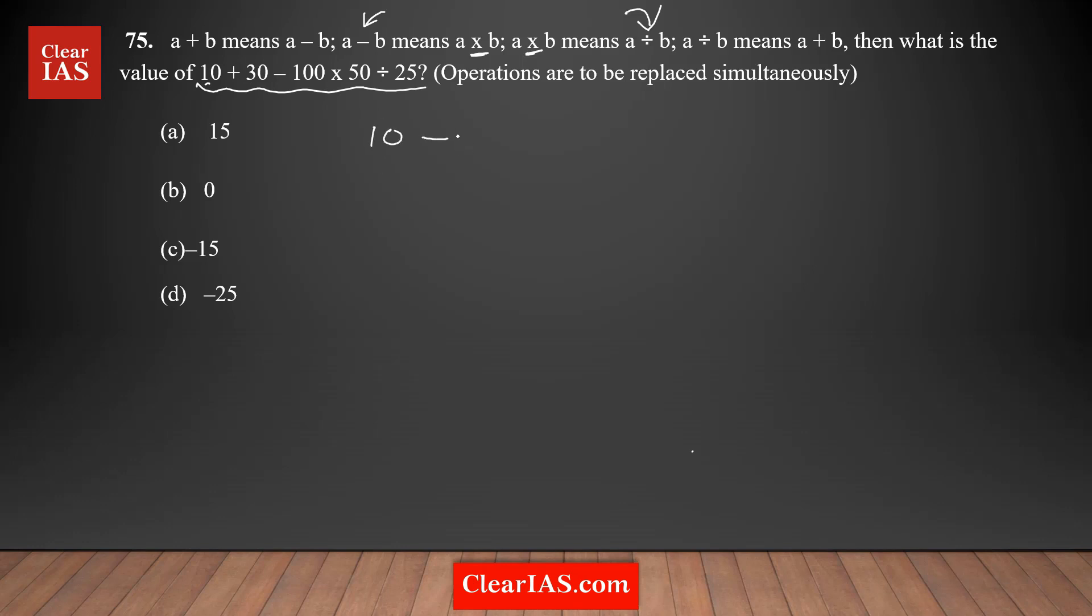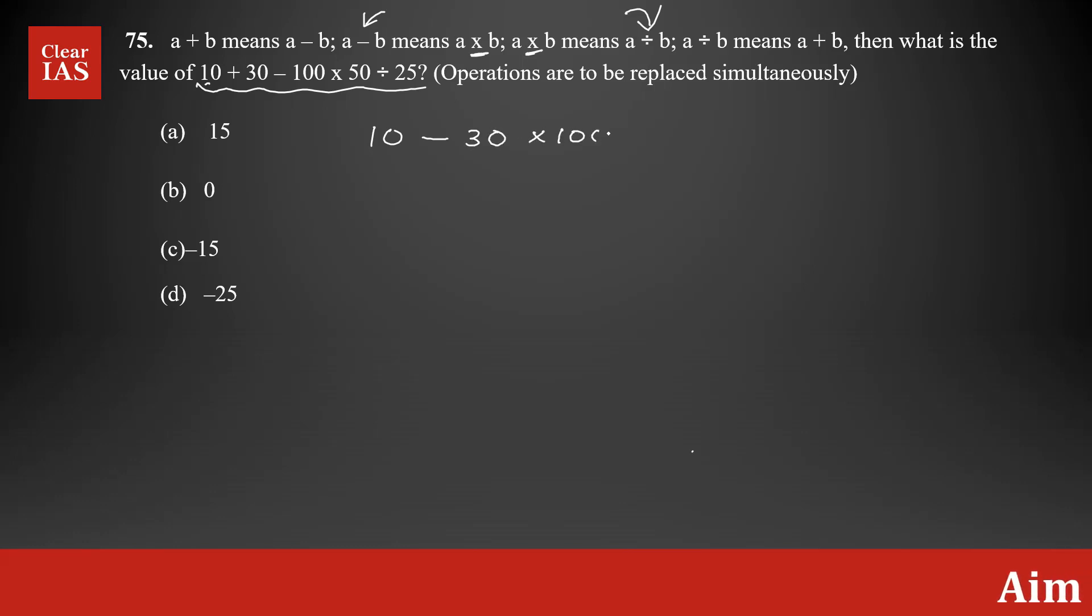10, instead of plus it's going to be minus, so 10 minus 30. Instead of minus it's multiplication, 30 multiplied by 100. Instead of multiplication it's division by 50, and instead of division you replace it by addition plus 25.